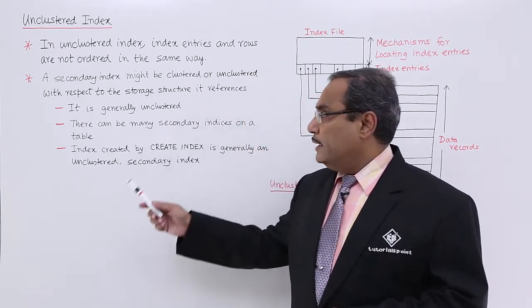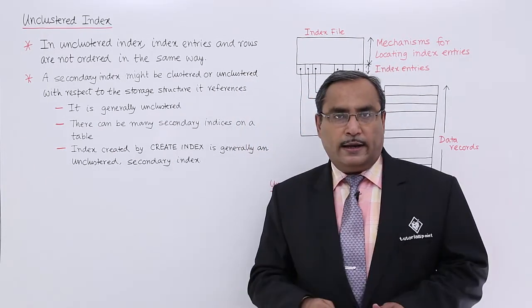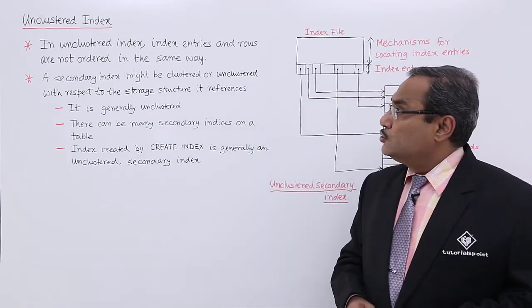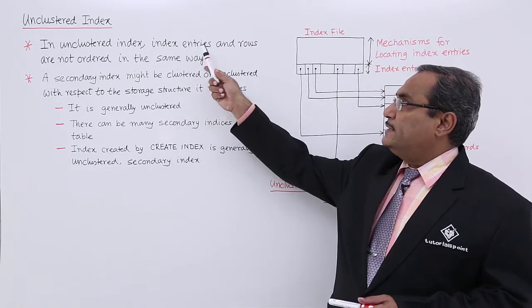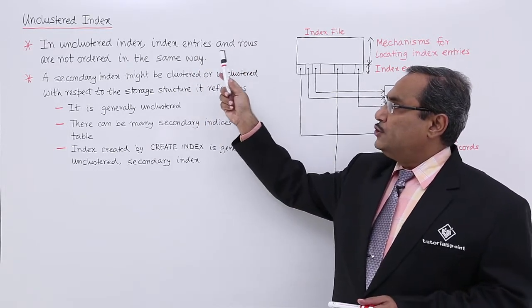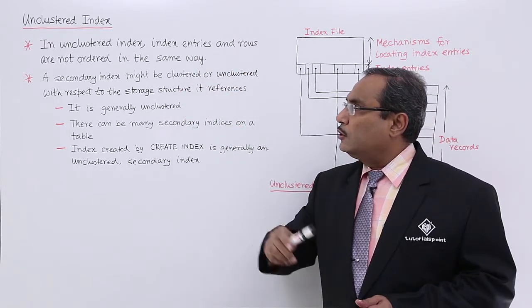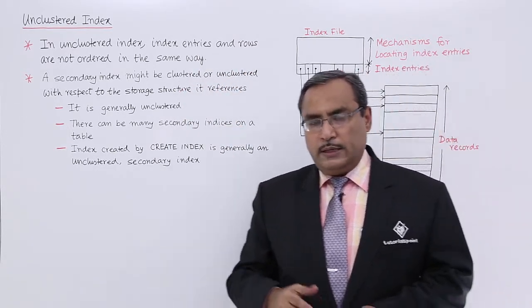Now let us go into the details. In an unclustered index, index entries and the rows are not ordered in the same way.